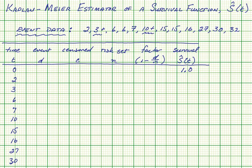The first thing we'll do is tabulate all of these with an event time starting at zero, then listing all the event times, including the censored items, exactly once. So at time two, we'll have an event, nothing censored. At time three, no event, but one censored.